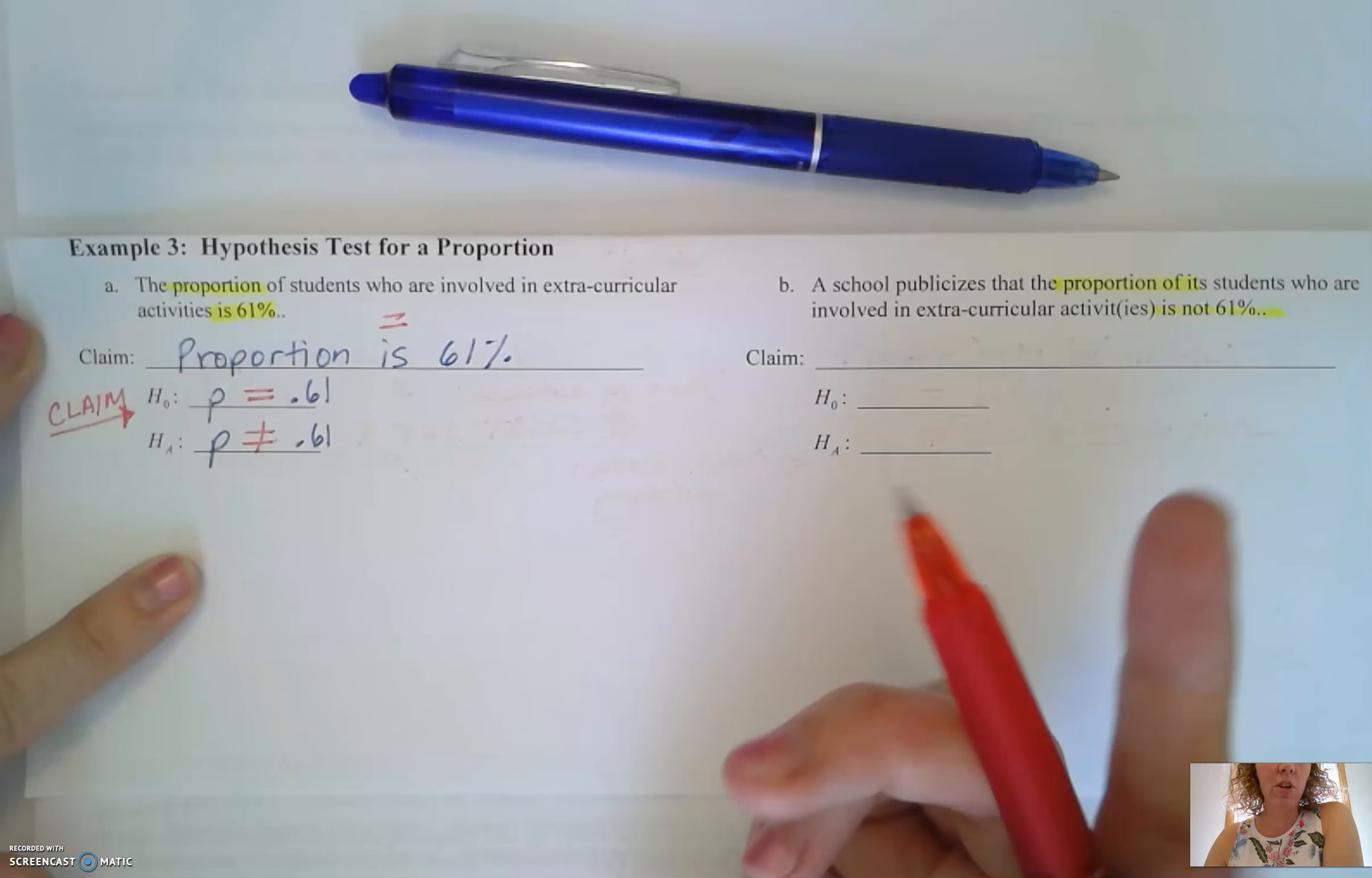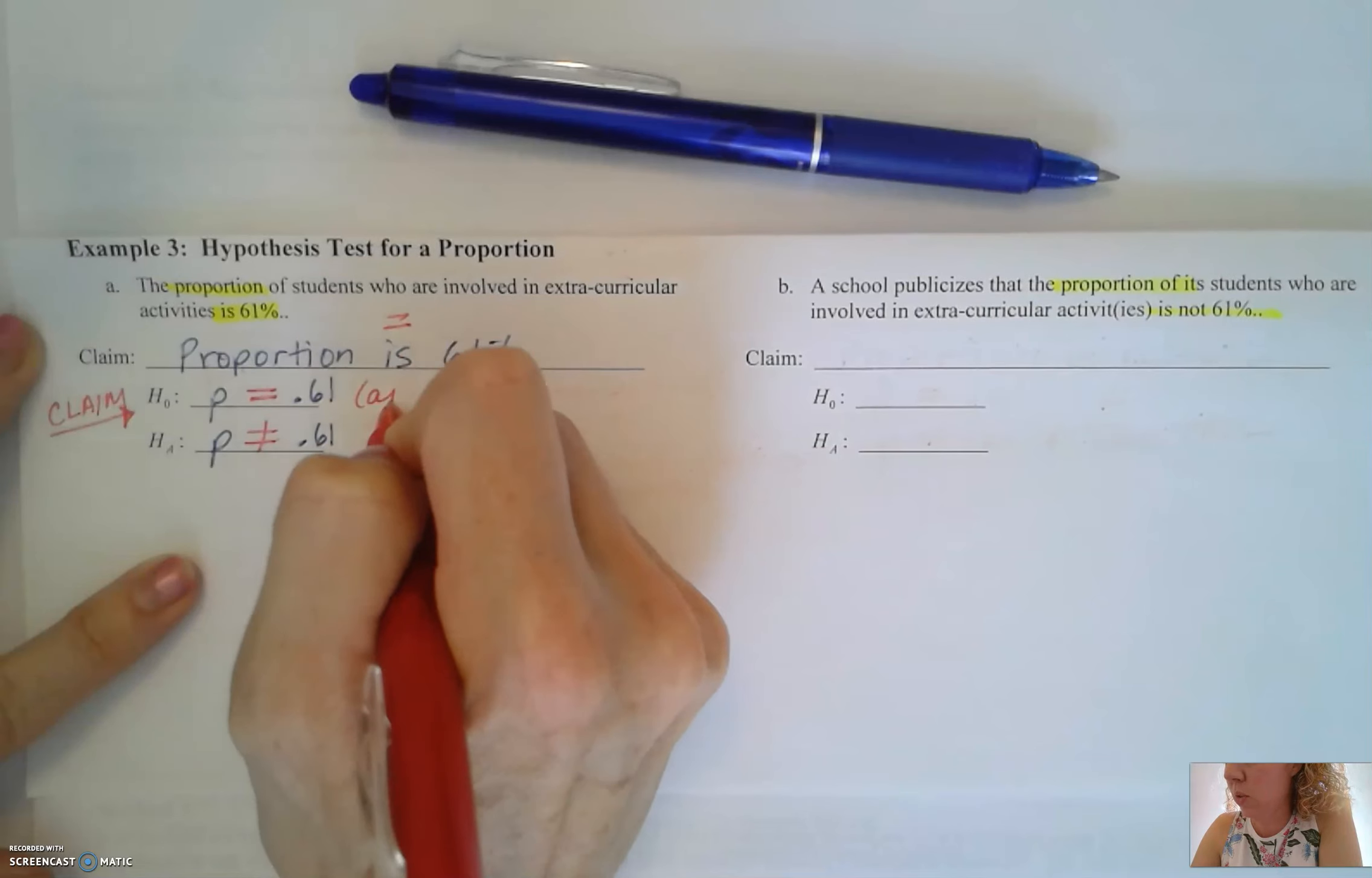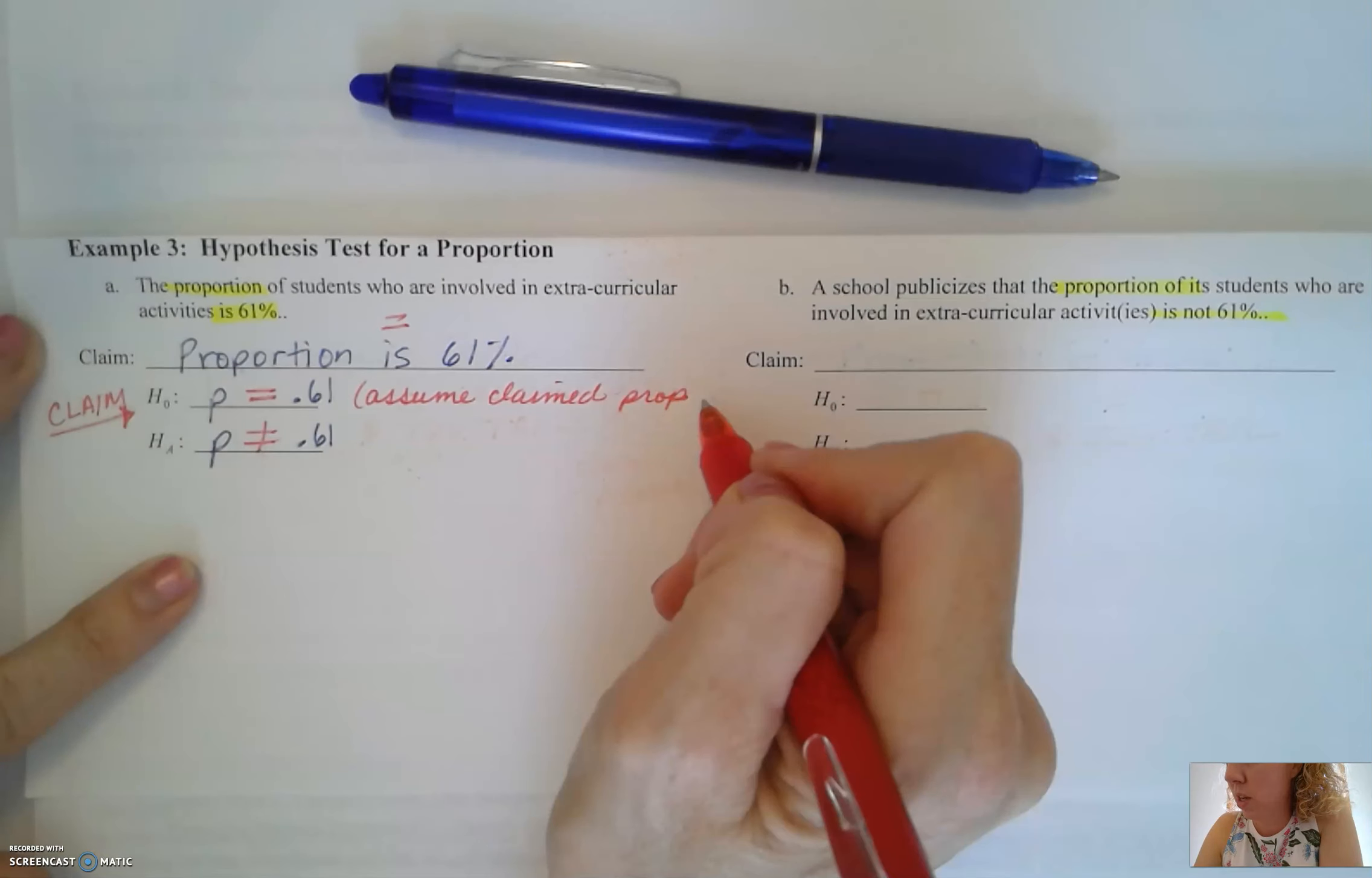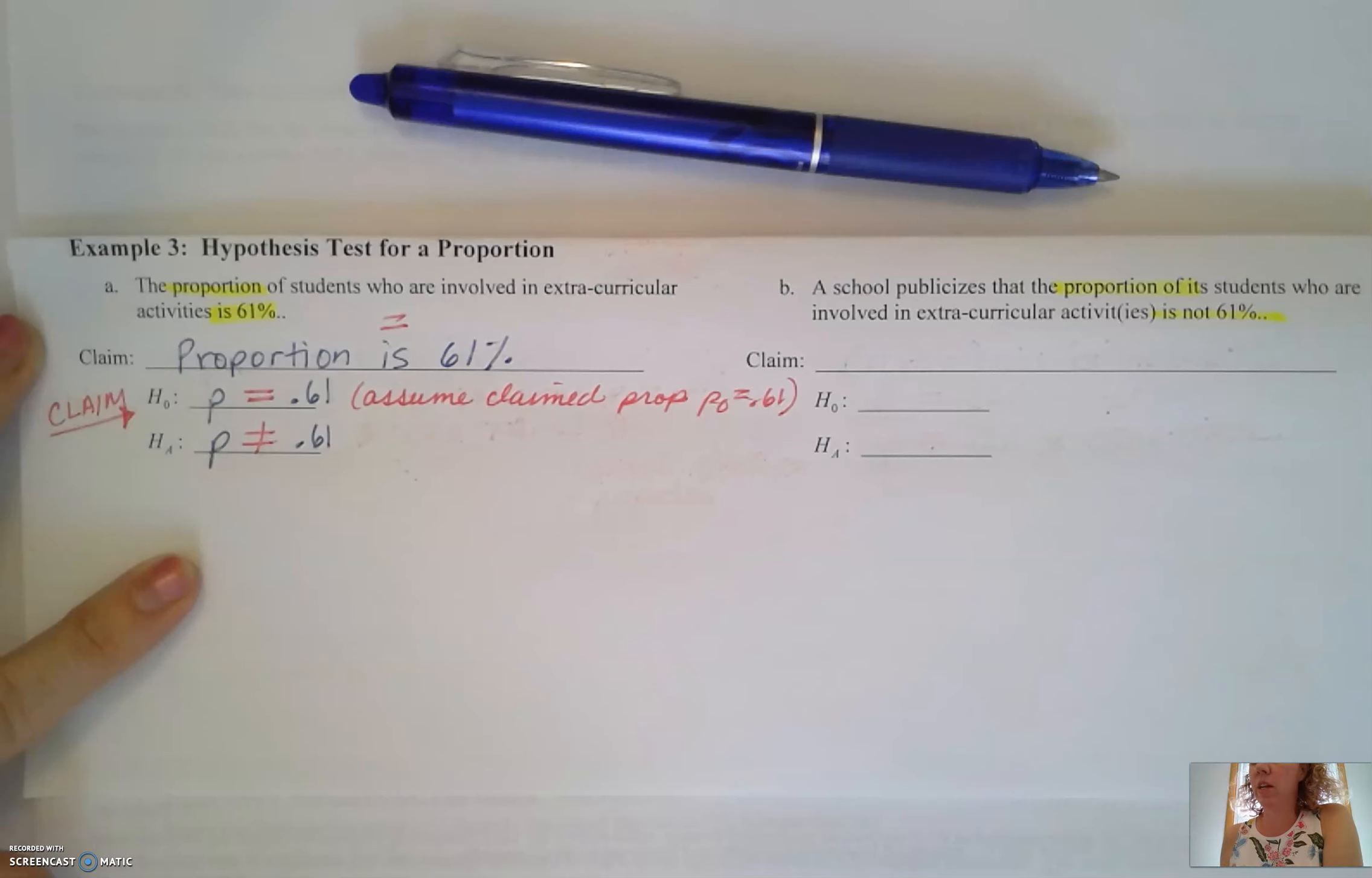A couple other things to note here is our underlying assumption. We're going to assume our claimed proportion is going to be P sub 0 equals 0.61. We will use that later on in our calculations.